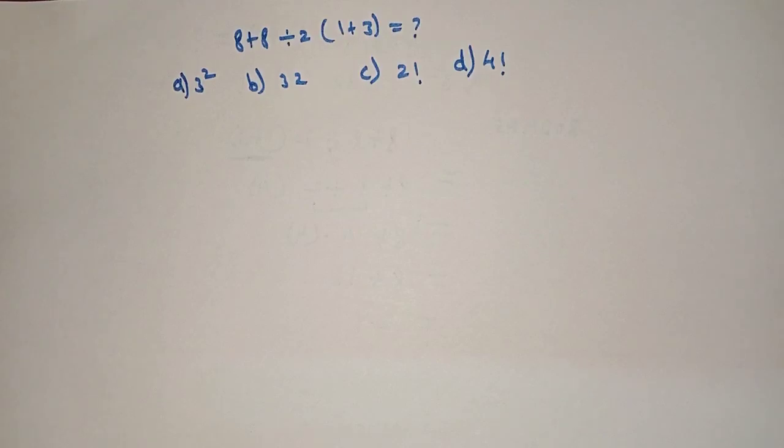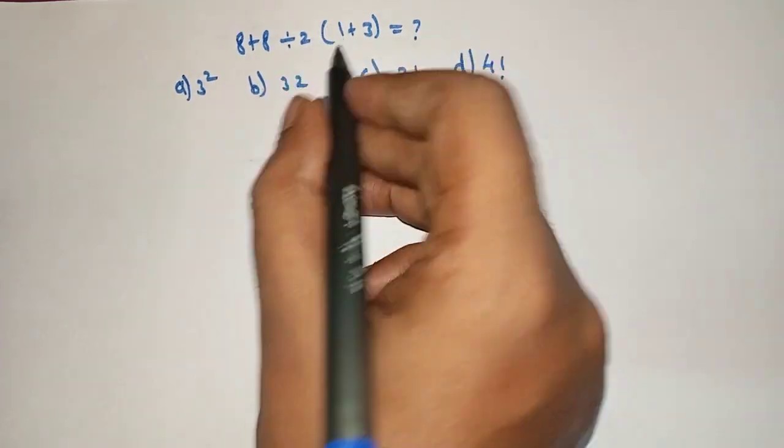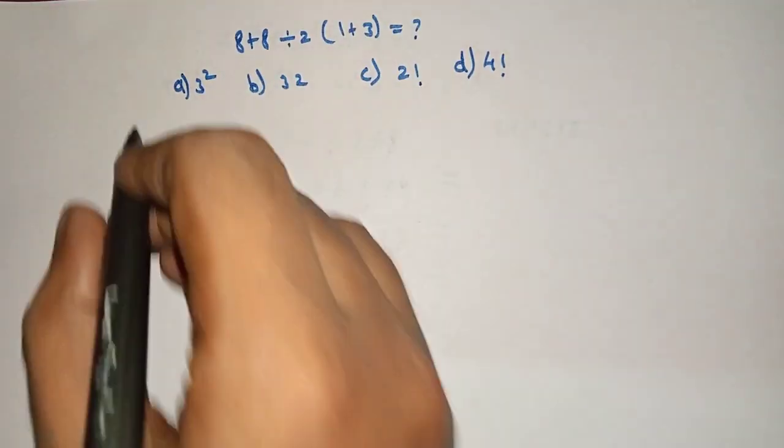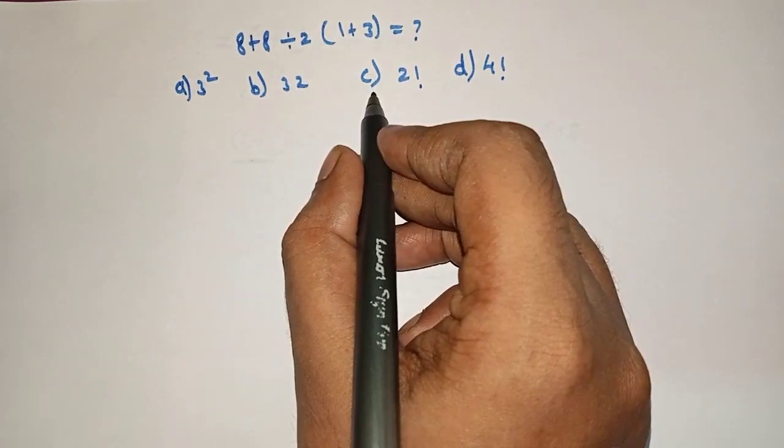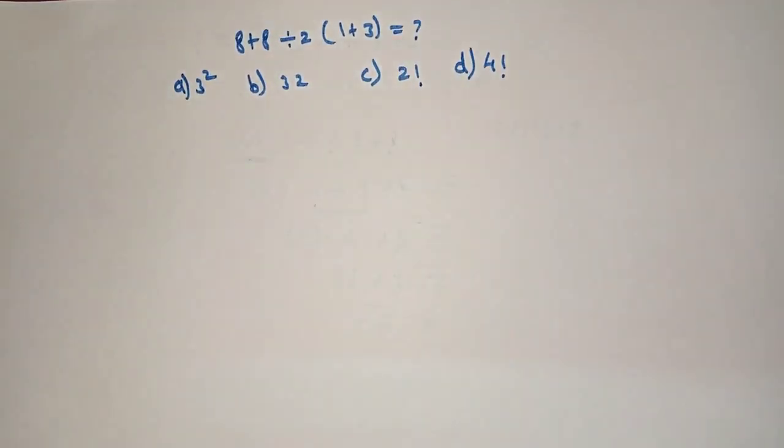Hello friends, welcome to Aha Math. 8 plus 8 divided by 2 in the bracket 1 plus 3 is equal to what? Option a: square of 3, option b: 32, option c: 2 factorial, option d: 4 factorial.